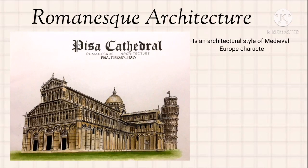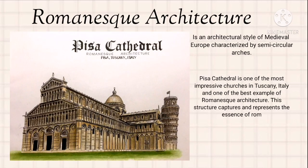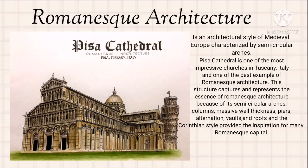Romanesque architecture is an architectural style of medieval Europe characterized by semi-circular arches. Pisa Cathedral is one of the most impressive churches in Tuscany, Italy, and one of the best examples of Romanesque architecture. This structure captures the essence of Romanesque architecture because of its semi-circular arches, columns, massive wall thickness, piers, alternation, vaults and roofs, and the Corinthian style provided the inspiration for many Romanesque capitals.